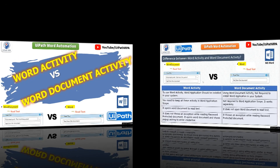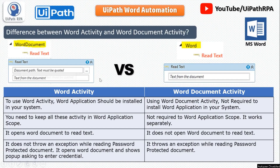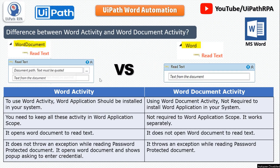The first difference: to use Word Activity, Word application must be installed in your system. But using Word Document Activity, it is not required to install Word application in your system — similar to the Excel Activity versus the Workbook Activity.